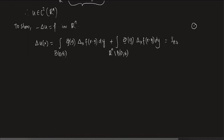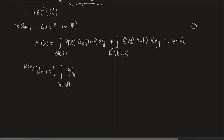We write this as Iε + Jε. Now let us estimate |Iε| = |∫_{B(0,ε)} φ(y) Δₓf(x − y) dy|. Since f is C², Δₓf is a continuous function on this ball and we can take its maximum outside.